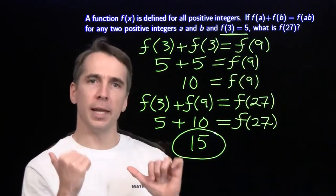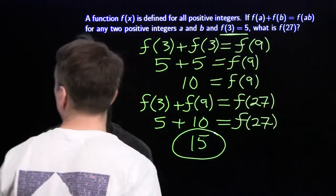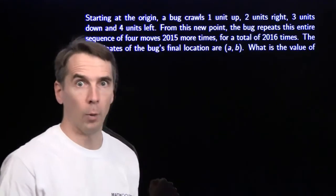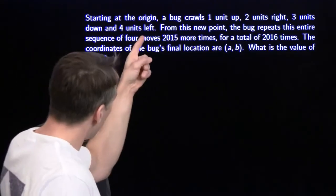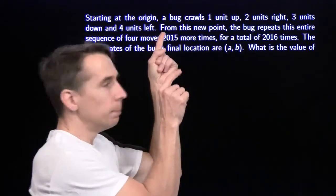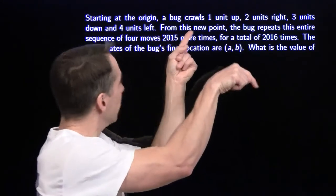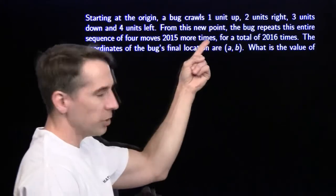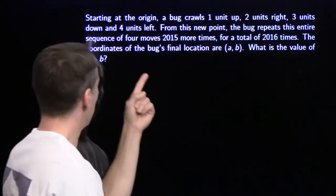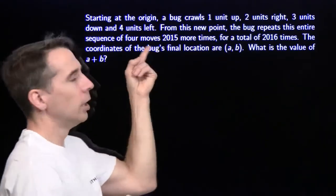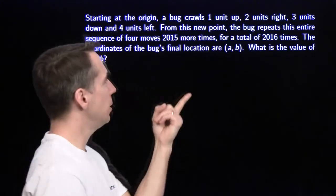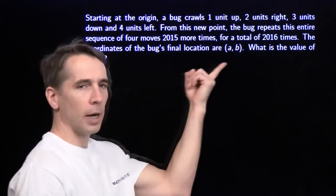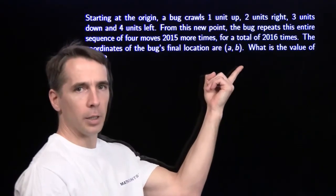On to the next problem. A bug starts at the origin, crawls 1 unit up, 2 units right, 3 units down, 4 units to the left. Then from that new point, the bug repeats this whole sequence 2,015 more times, for a total of 2,016 times. We want to find where the bug ends up.